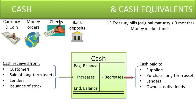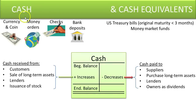Cash and cash equivalents. Why is cash an asset? Cash is an asset because it can provide you a future benefit — you will be able to buy things with it. Cash can be in the form of currency and coin, money orders, checks from customers (we assume they will clear the bank), and your own bank deposits.